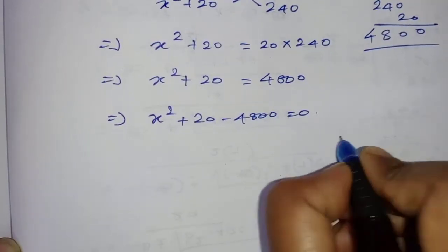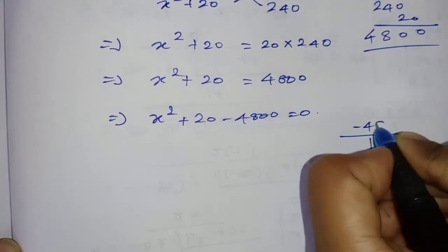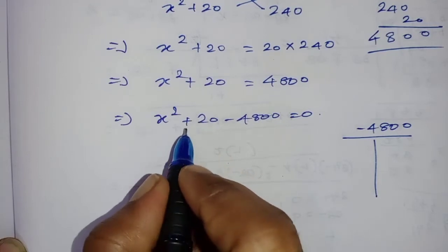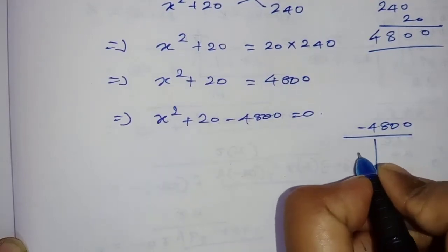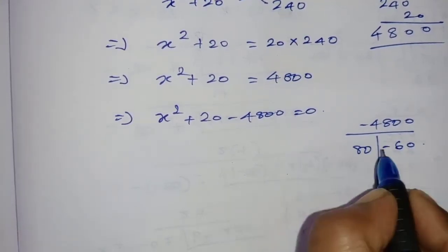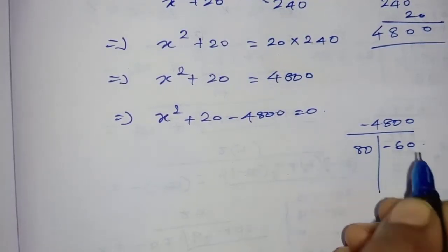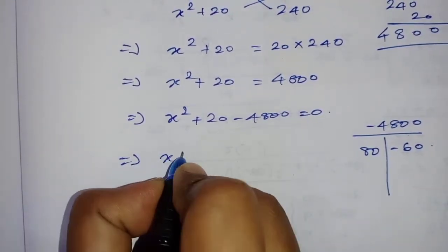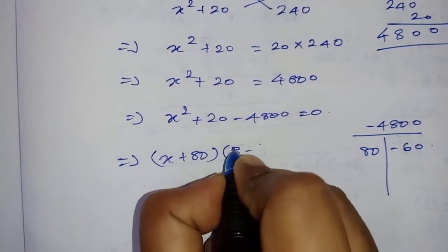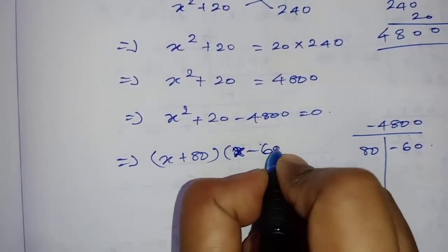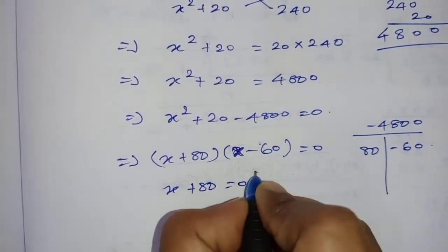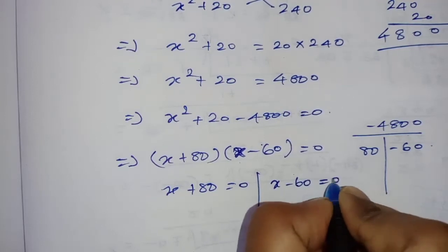Now we factorize the quadratic equation x squared plus 20x minus 4800 equals 0. We need two numbers that multiply to negative 4800 and add to 20 — those are 80 and negative 60. So the factors are: x plus 80 times x minus 60 equals 0. Therefore x plus 80 equals 0 or x minus 60 equals 0.